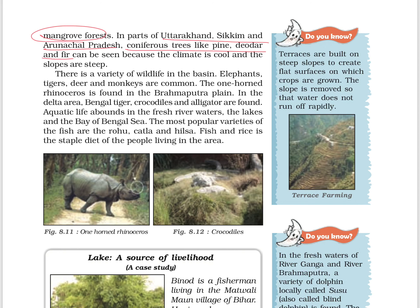The delta is covered by mangrove forests. In parts of Uttarakhand, Sikkim, and Arunachal Pradesh, coniferous trees like pine, deodar, and fir are found due to cool climate and steep slopes. In the wildlife of this basin, elephants, tigers, deer, and monkeys are common. The one-horned rhinoceros is found in the Brahmaputra plain. In the delta area, Bengal tigers, crocodiles, and alligators are found. Aquatic life is abundant, with popular fish varieties including rohu, katla, and hilsa. Fish and rice are the staple diet of people living here.